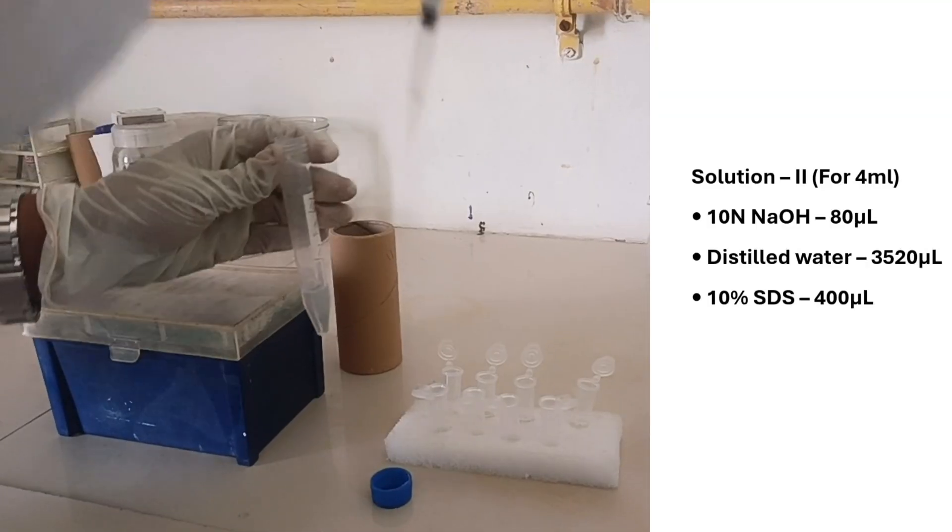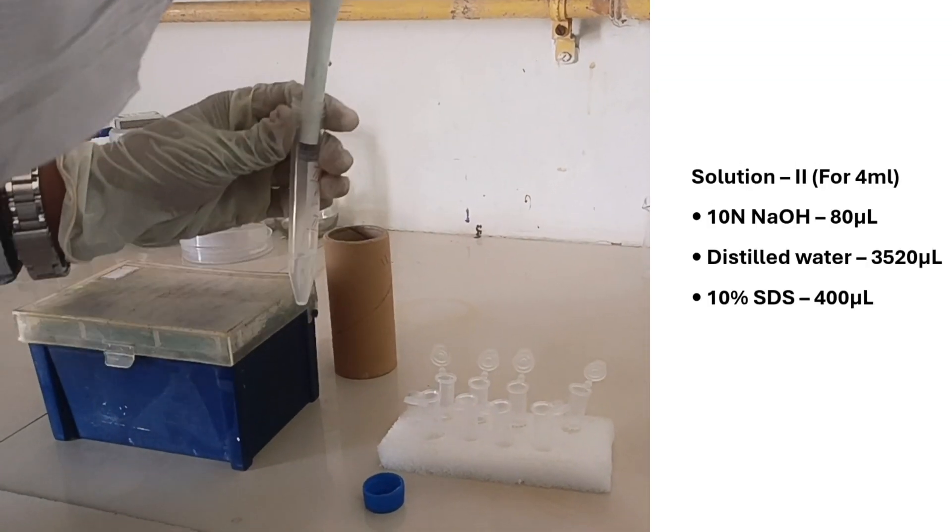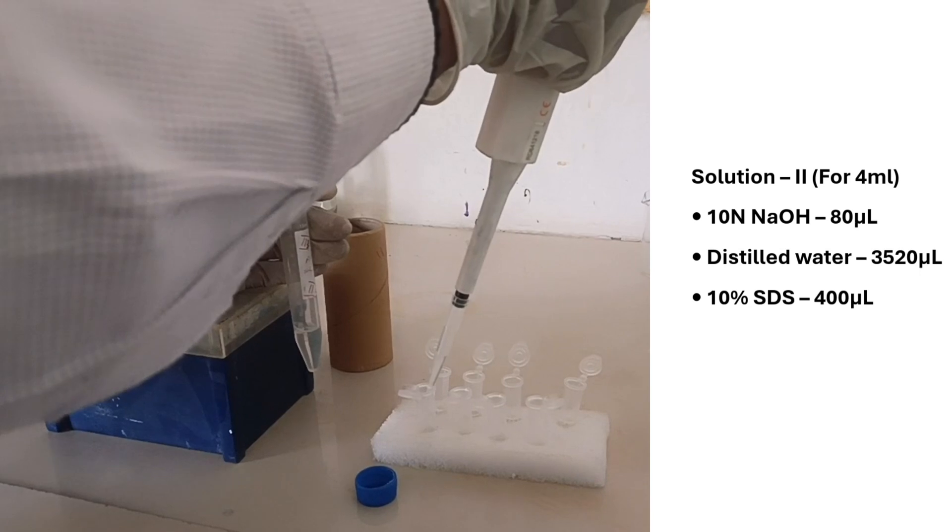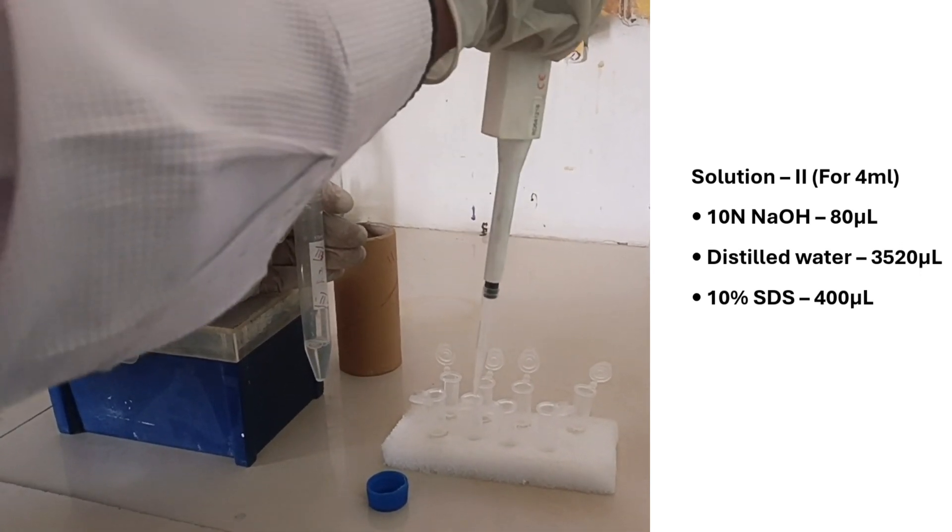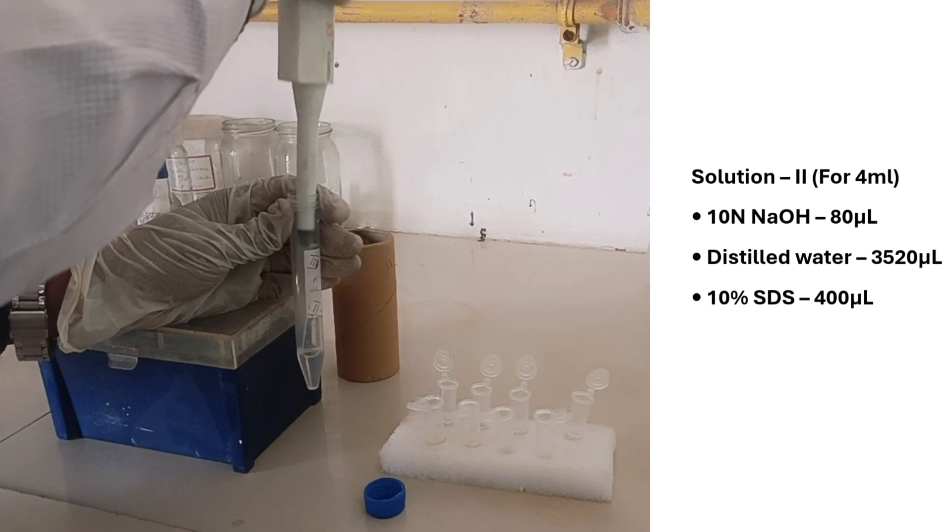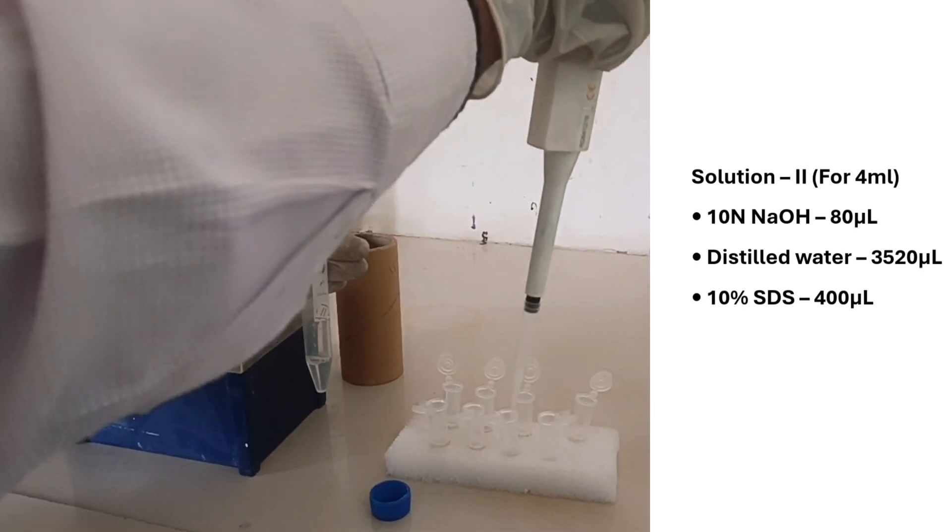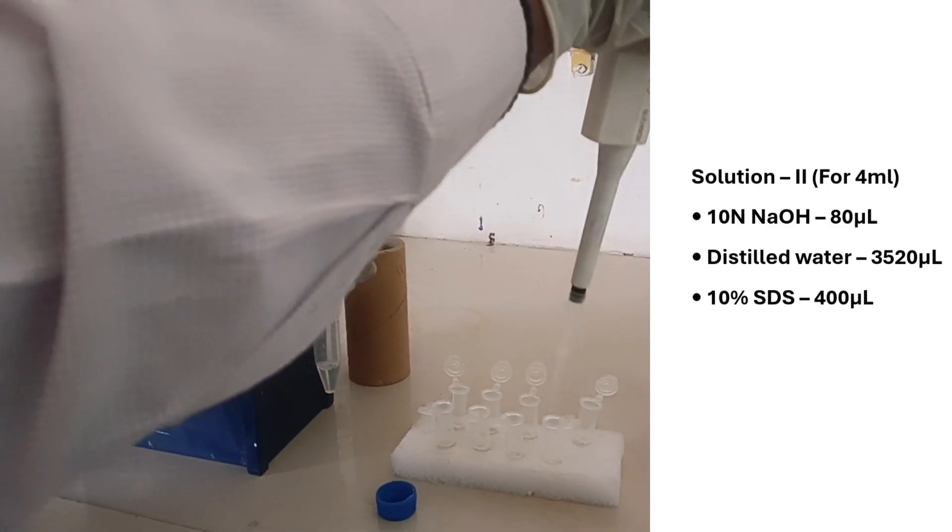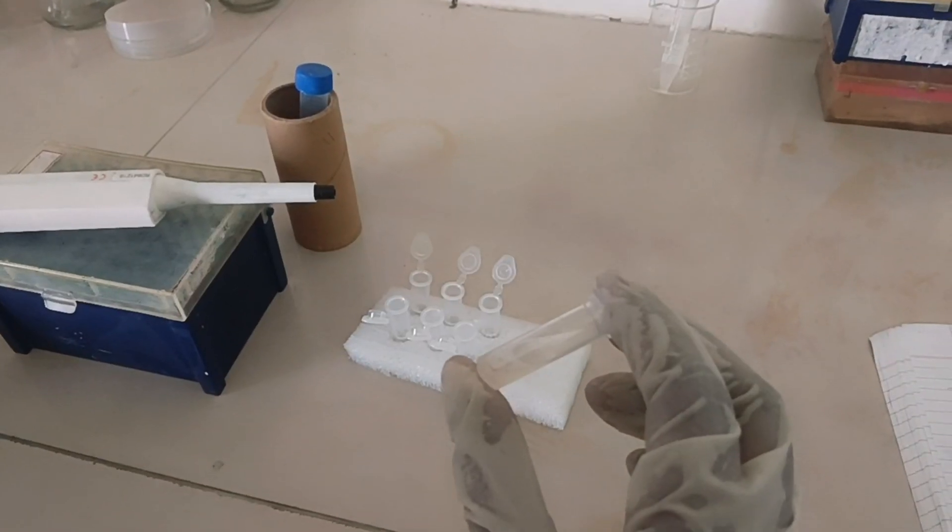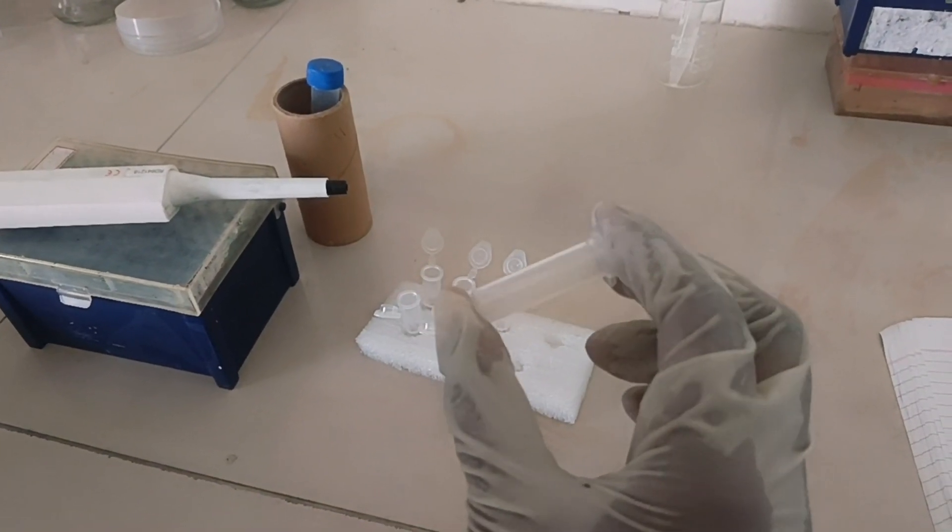We are going to add solution 2, 400 microliters which has been prepared for 4 ml by adding 10N NaOH 80 microliters, 10% SDS 400 microliters, and 3520 microliters distilled water. Gently mix the tubes by inverting upside down.